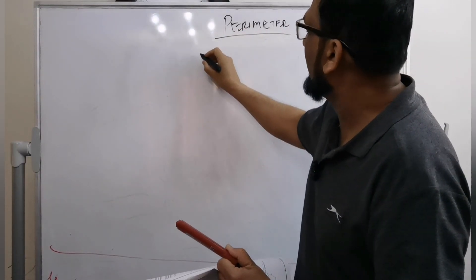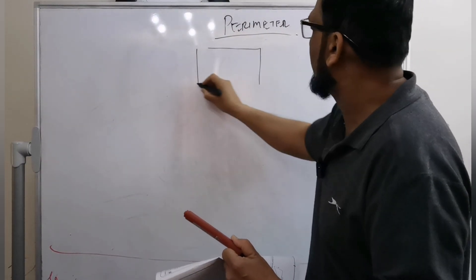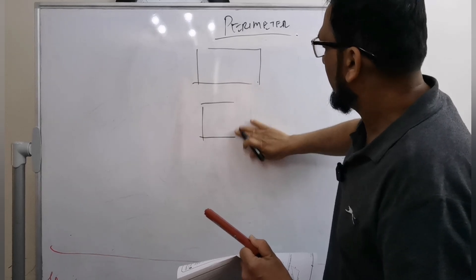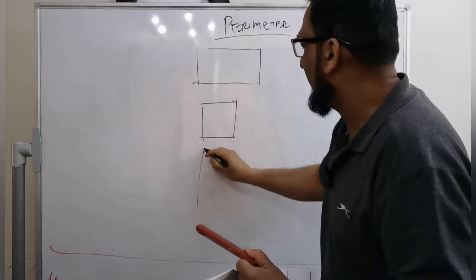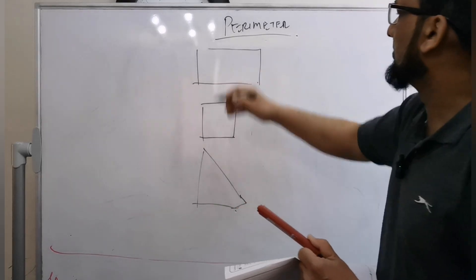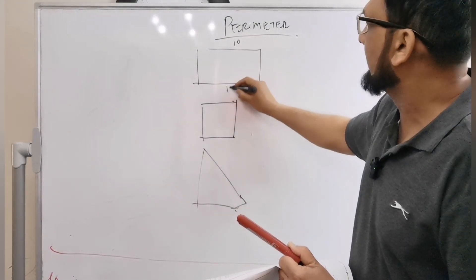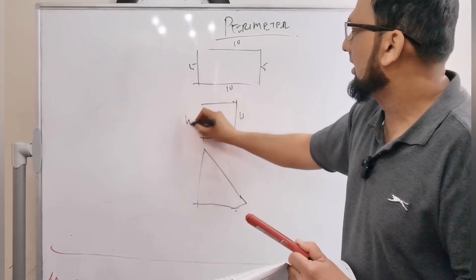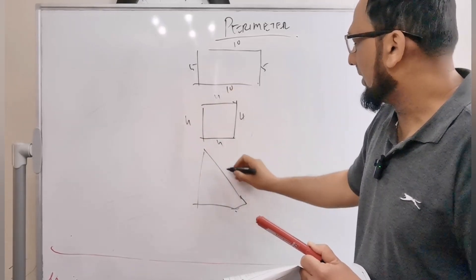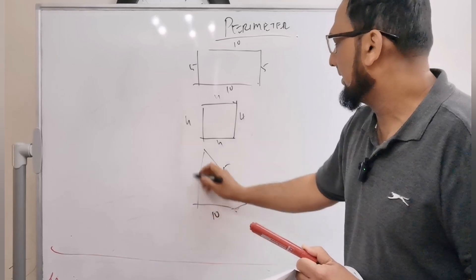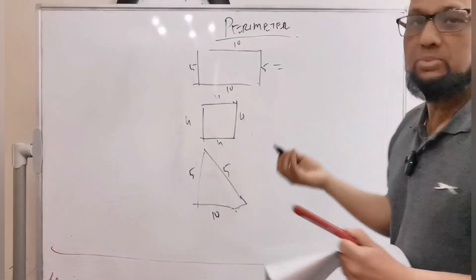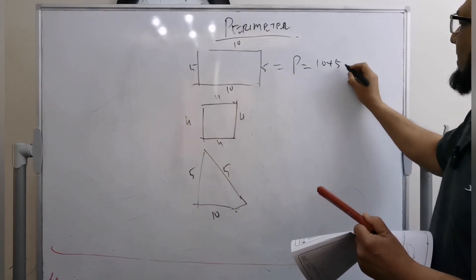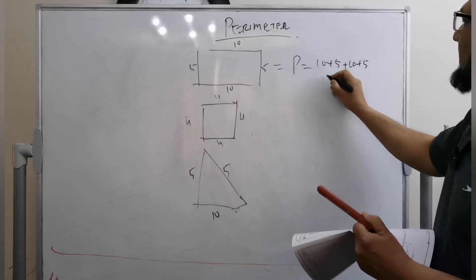For example, if I have a rectangle, a square, and a triangle — and I ask you to find the perimeter. This rectangle has sides of 10 meters, 10 meters, 5 meters, and 5 meters. How do you find the perimeter? Very simple: you add all sides. So 10 plus 5 plus 10 plus 5 gives you 30.